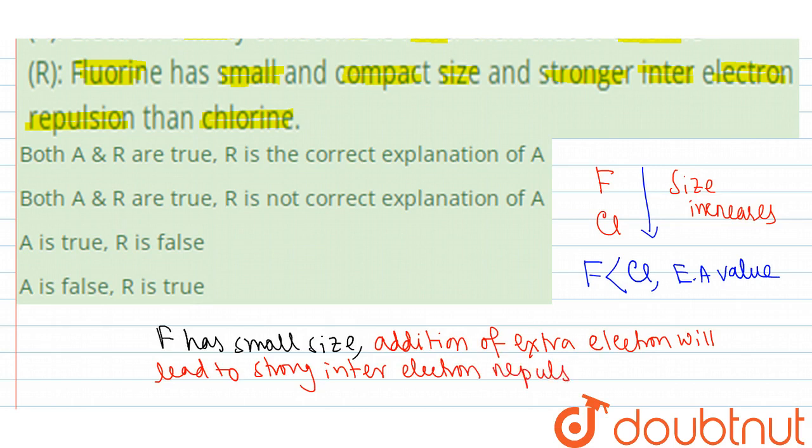That is less in case of chlorine. So that means for this reason, fluorine has lower electron affinity than chlorine.